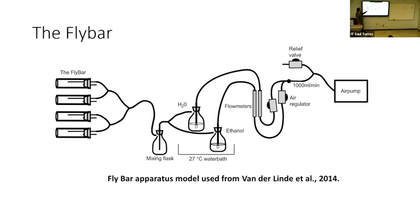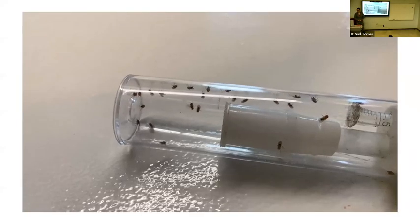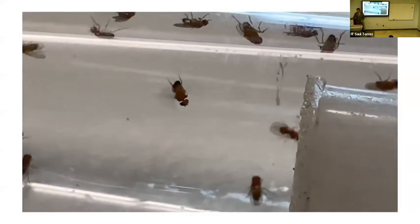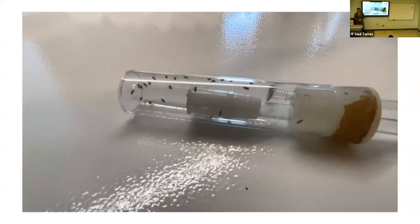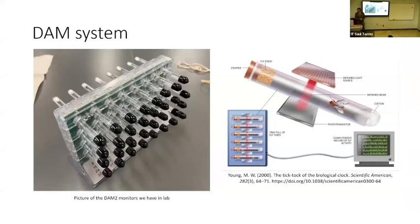We would expose the flies to vaporized alcohol since they don't do well with surface tension. Here's a video of them within the exposure chambers. The focus right now is just a fly that's done — later we'll see some that have succumbed to the ethanol. In the meantime, we'll be covering the DAM system.